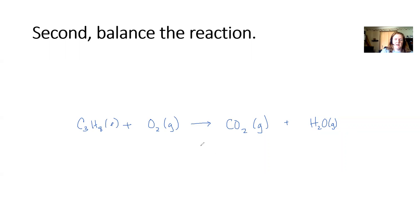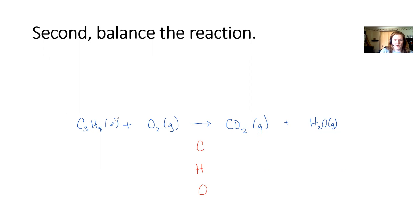To balance the reaction, I like to make a list of all my elements. I start with metals if any, but we don't have any. So carbon is next, as the only non-metal that is not hydrogen or oxygen, then hydrogen, then oxygen. We have three carbons on the left in C3H8, and only one on the right in CO2, so I put a coefficient of 3 in front of CO2 so they match.